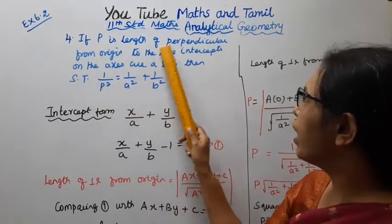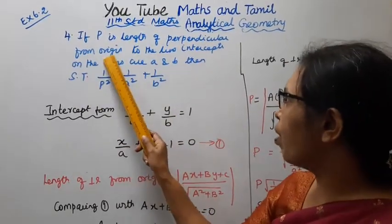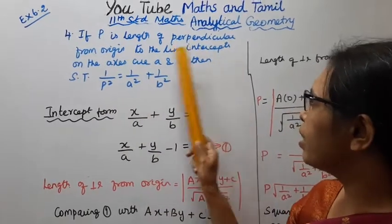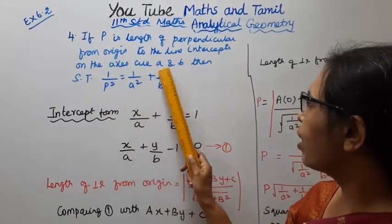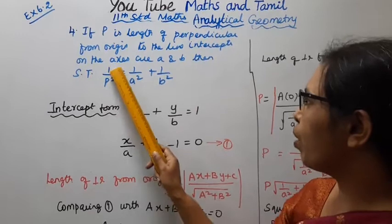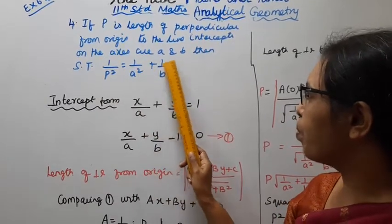If P is the length of perpendicular from origin to the line, intercepts on the x-axis are A and B, then show that 1 by P square equals 1 by A square plus 1 by B square.